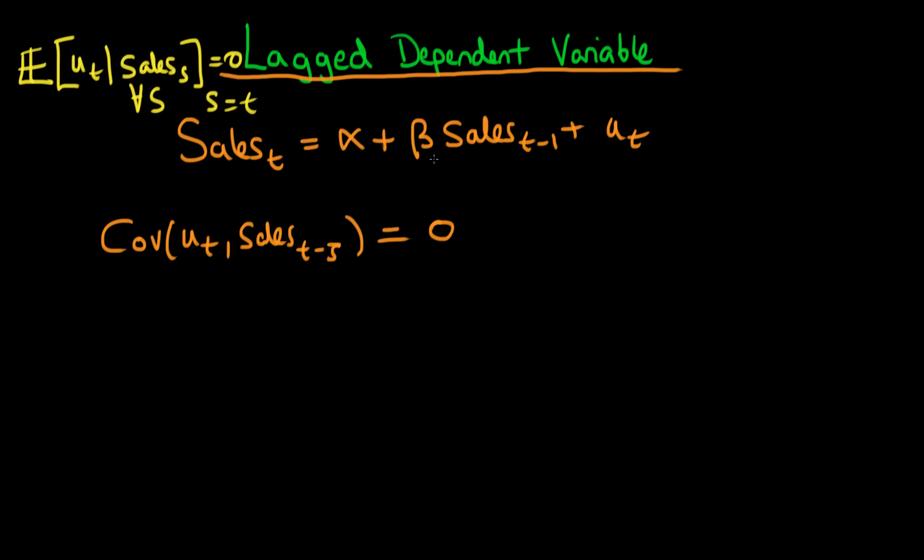But remember, the strict exogeneity assumption says that this covariance has to hold for all periods s, including the situation where we're talking about that particular time period. So the covariance of ut with sales at time t also has to equal 0.